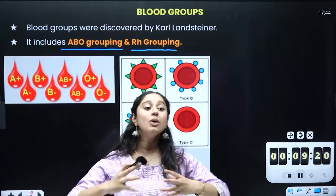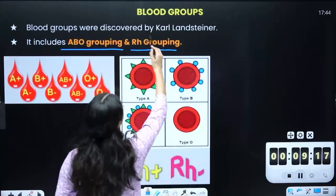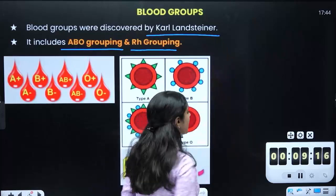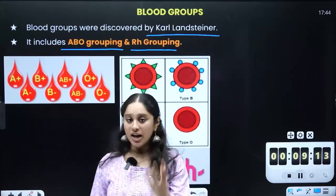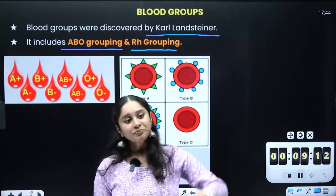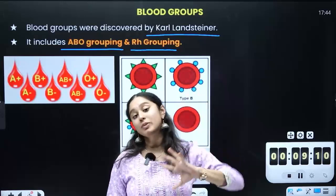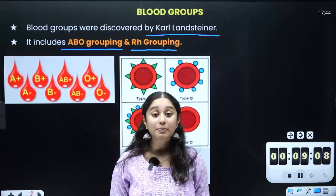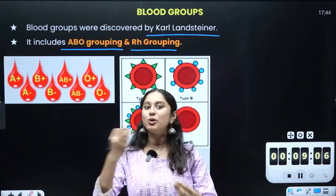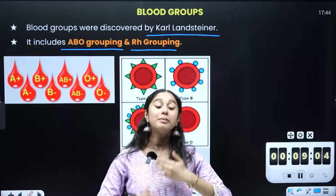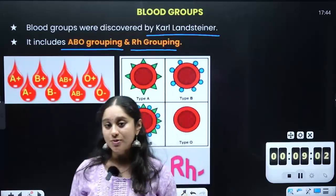Blood grouping was discovered by Karl Landsteiner, a scientist. These two systems are very, very vital because mixing one group with another creates an immunological response.